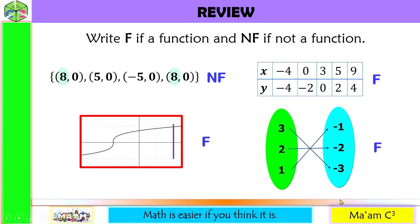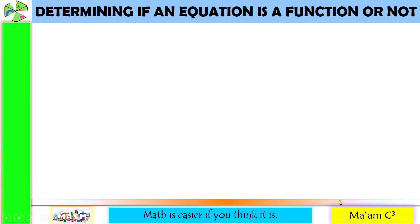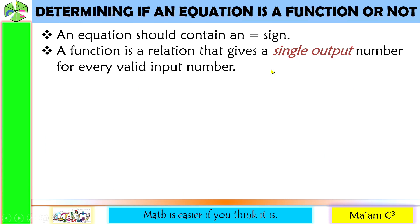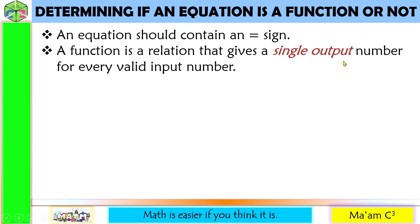Now I am going to teach you to determine if an equation is a function or not. You have to consider two things. One, an equation should contain an equal sign. We cannot call it an equation if it does not have an equal sign. And second, remember the definition of a function — it is a relation that gives a single output number for every valid input number. So in any given equation, we need to solve for y and analyze if any values of x will give different values of y. If there is only a single output of y for every value of x, then the equation is a function.